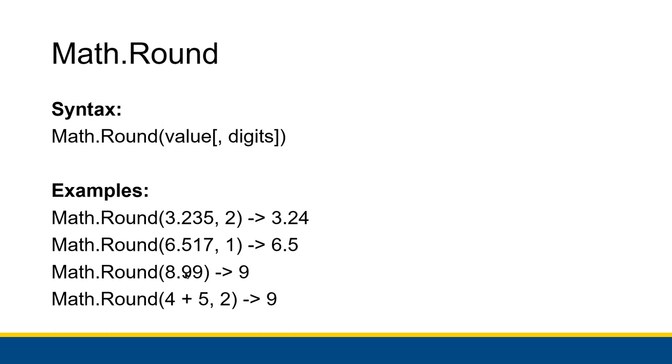You don't have to. So for example, the third example I gave here, if you just pass in 8.99, it will round it up to 9. It will assume that you want to round it up to the nearest whole number. However, you can specify two digits, which is great for currency: 3.235 becomes 3.24.